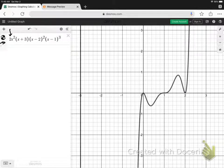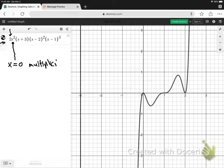Right, the x squared has a zero of 0, but it's squared, so it has a multiplicity of 2.